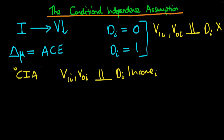After we've defined the conditional independence assumption, what we can do is say: conditional on the level of income, we can evaluate what the average causal effect of the treatment was — in other words, what is the average causal effect of infrastructure spending.